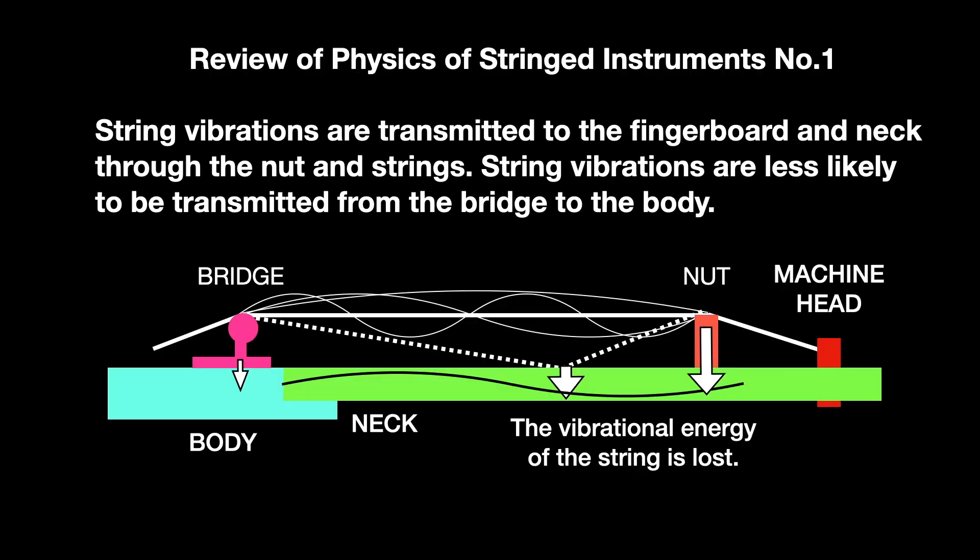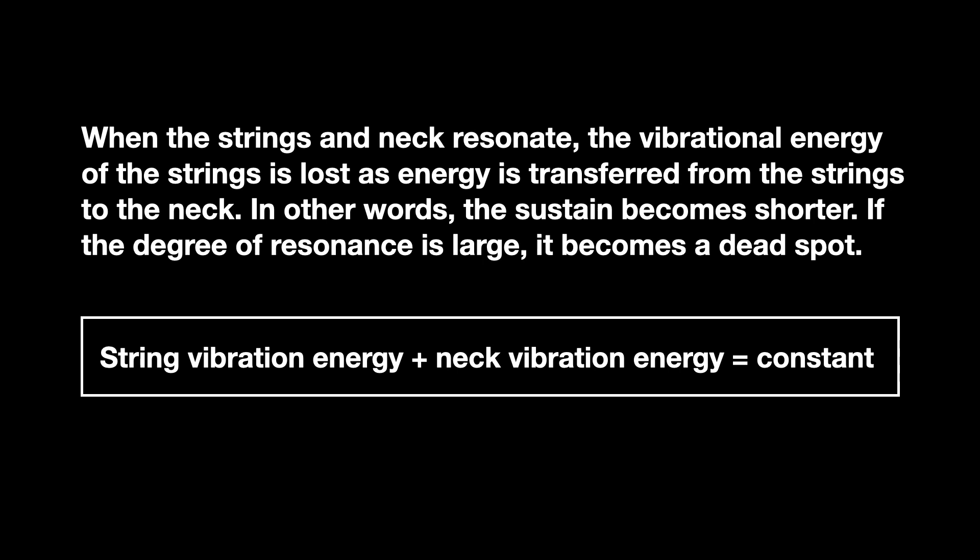String vibrations are transmitted to the fingerboard and neck through the nut and strings, but are less likely to be transmitted from the bridge to the body. When the strings and neck resonate, the vibrational energy of the strings is lost as energy transfers from the strings to the neck — in other words, the sustain becomes shorter. If the degree of resonance is large, it becomes a dead spot.